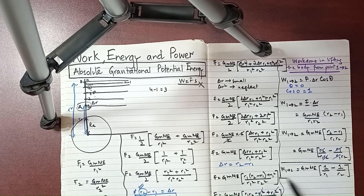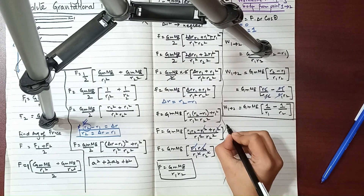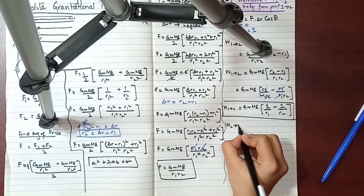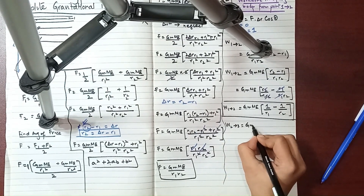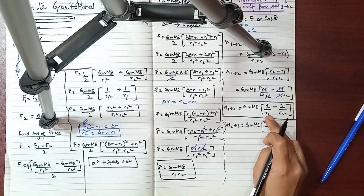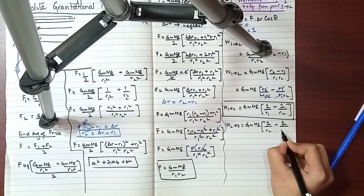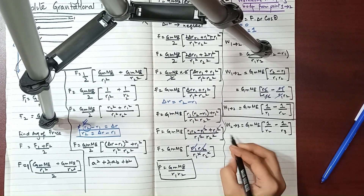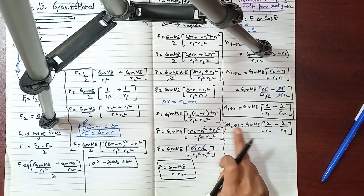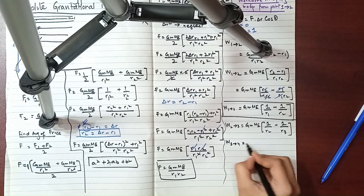We have the work done from point 1 to 2. Now we extend this: work done from 2 to 3 — that would be GMₑm times (1/r₂ minus 1/r₃), where r₂ and r₃ are the respective distances. We have done work done for point 2 to 3. Now work done from point 3 to 4 would similarly be GMₑm...